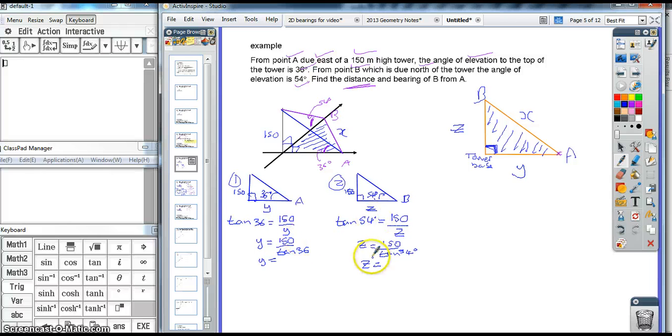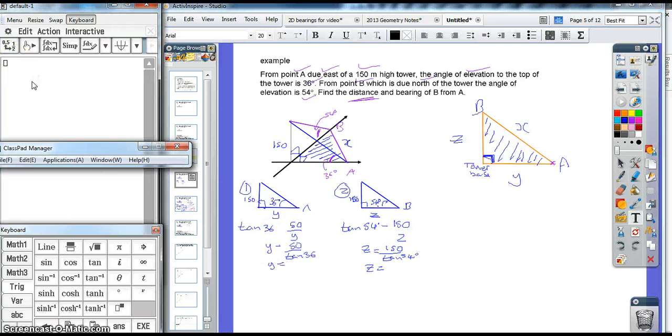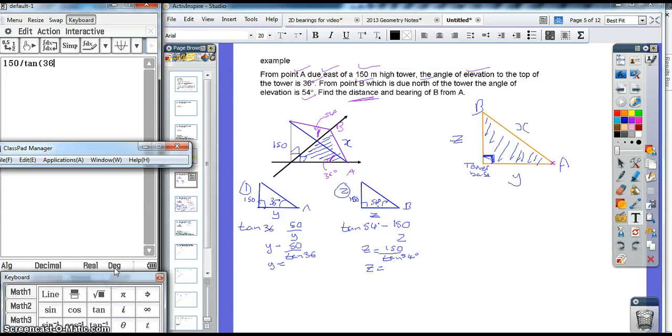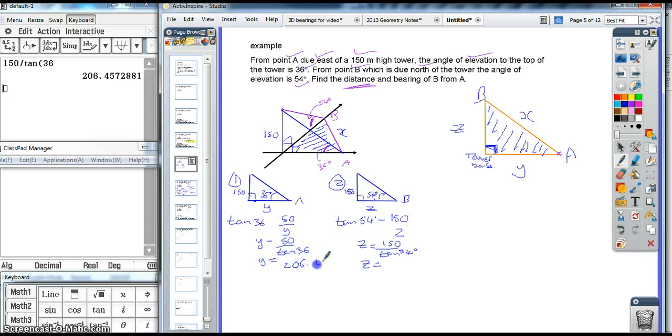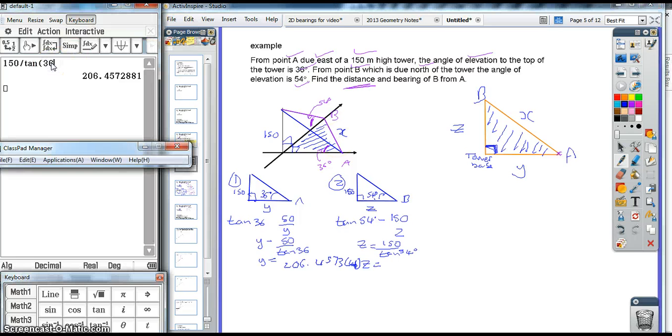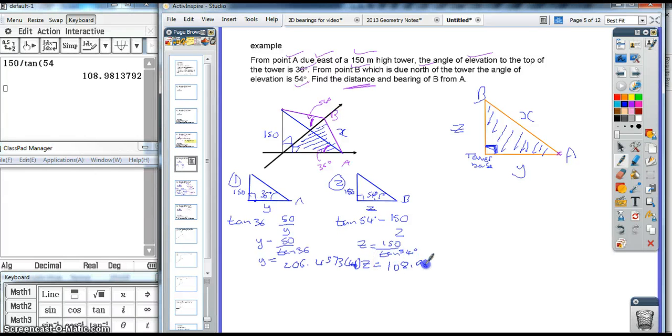So, first I'm going to find out what Y and Z are, after my working out here. So, I just need to use the calculator. 150 divided by tan 36. Just make sure that you're in degrees. There we are, make sure you're in degrees. And, I get 206.4573. So, four decimal places. And, Z, I'm going to have 150 divided by tan 54. Oh, excuse me, 108.9814.